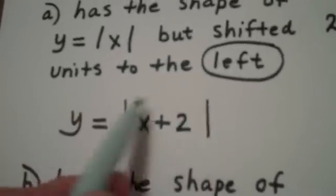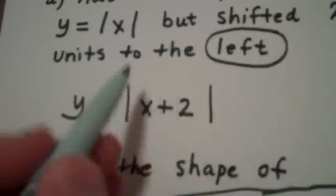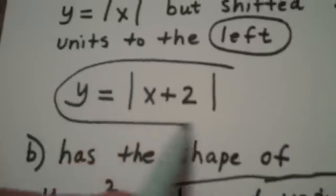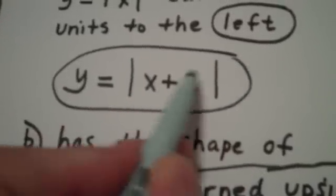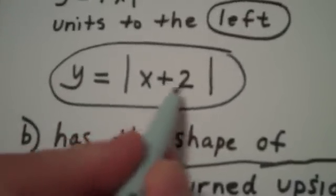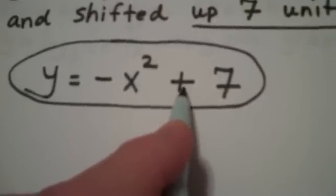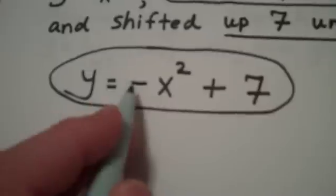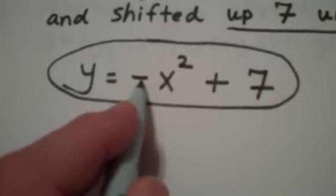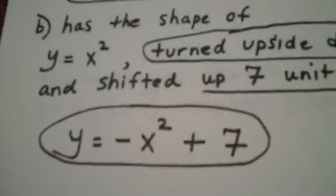When there's a shift to the left or right, it's the x value that's involved, and just the opposite of what you think is going to happen happens. When it's a y value, it's the exact thing that you think is going to happen. And of course, remembering that the minus in front is going to turn it upside down. OK.